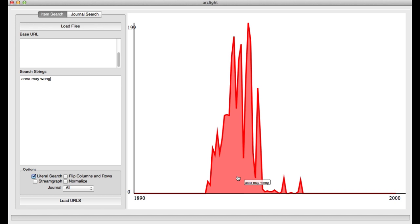For the example of Anna May Wong, we can quickly see how Wong trended within these periodicals over time, including when she began to appear in the corpus, years that she peaked, and when her name began to disappear.